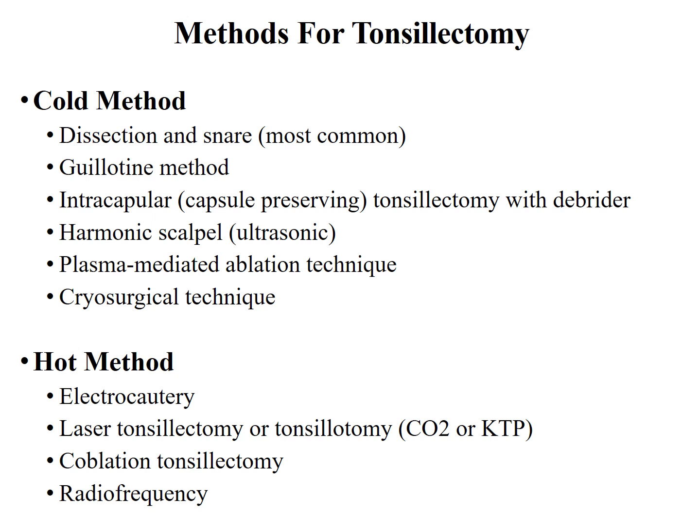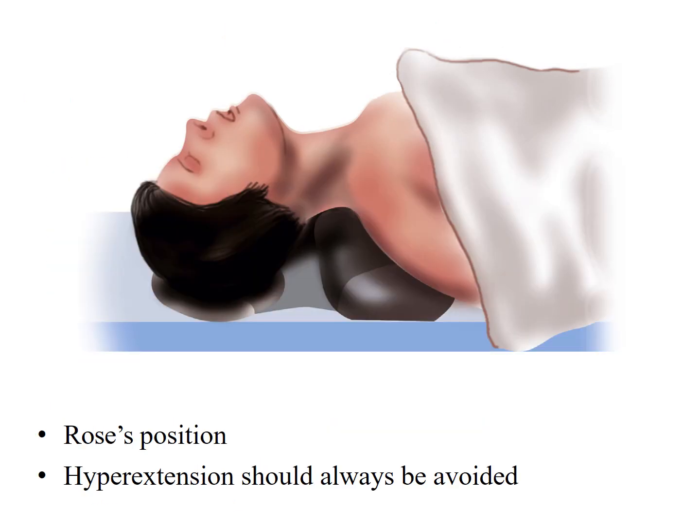Methods of tonsillectomy are subdivided into cold methods and hot methods. Cold methods include dissection and snare, which is the most commonly performed; guillotine method, which is now obsolete; intracapsular tonsillectomy with debrider — where preserving the capsule reduces post-operative pain; harmonic scalpel; plasma-mediated ablation technique; and cryosurgical technique. Hot methods include electrocautery — both unipolar and bipolar, with bipolar now most commonly used — laser tonsillectomy or tonsillotomy, coblation tonsillectomy, and radiofrequency technique.